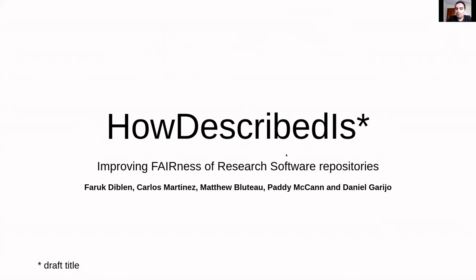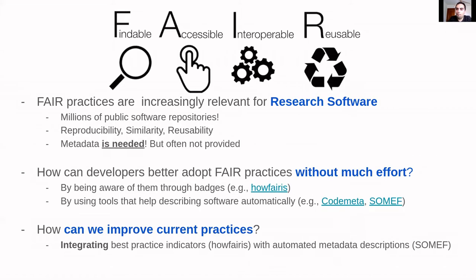This was a collaboration between five people. The problem we wanted to address is that now that we have seen how FAIR practices and FAIR for data has been increasingly adopted by the community, we have also seen that FAIR for research software is becoming increasingly important. There are millions of repositories out there — some follow best practices, some don't — but some of these practices are very important for reproducibility, finding similar software, and actually achieving proper reusability. For that, we need proper descriptions and metadata for these repositories.